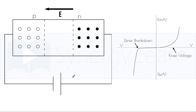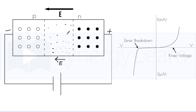In reverse bias, the positive terminal of the cell is connected to the N side and the negative terminal is connected to the P side. This aids the original electric field of the unbiased PN junction diode, and therefore the width of the depletion region increases. It remains of the order of micrometers, but it increases, making it difficult for holes and free electrons to diffuse to the other side, and therefore the diffusion current gets suppressed.